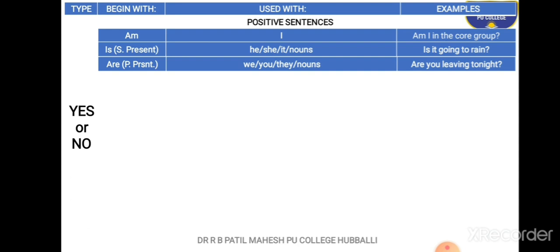The next word is 'are'. 'Are' goes with plural subjects in the present form. The words used with 'are' are: we, you, they, and other nouns. Examples: 'Are you leaving tonight?', 'Are we heading to market?', 'Are they approaching us?'